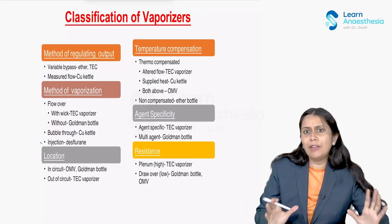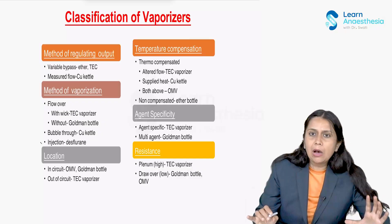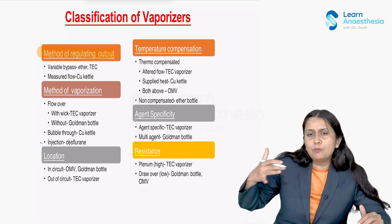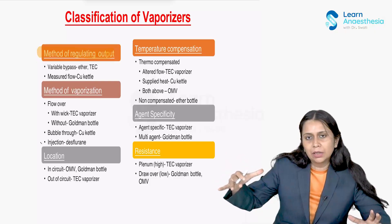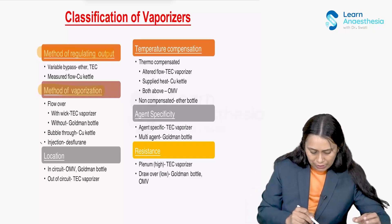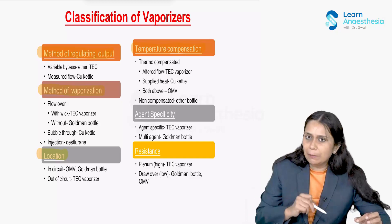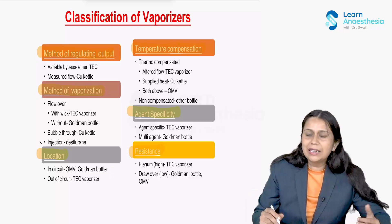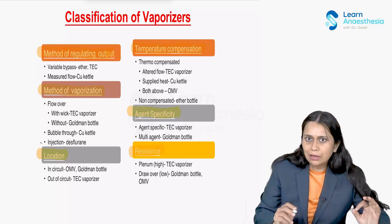How do we classify the vaporizer? Vaporizers are classified on six important points: first, the method of regulating the output — how the vapor is added and how much; second, the method of vaporization; third, where it is located — in-circuit or out-of-circuit; fourth, whether it is temperature compensated or not; fifth, whether it is agent-specific or not; and sixth, whether it has high or low resistance.